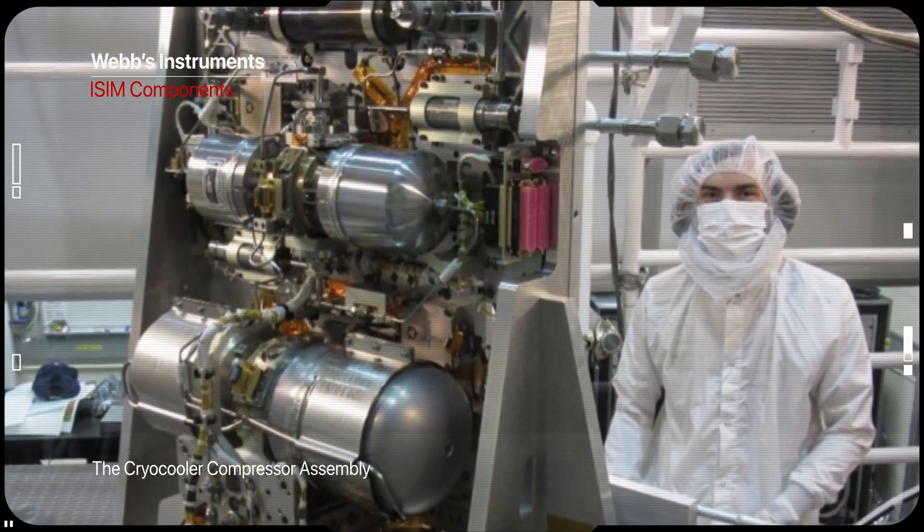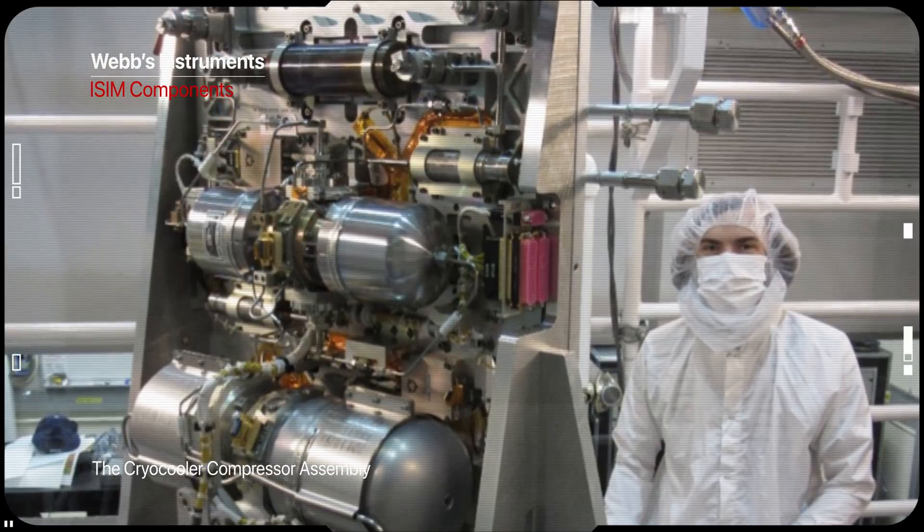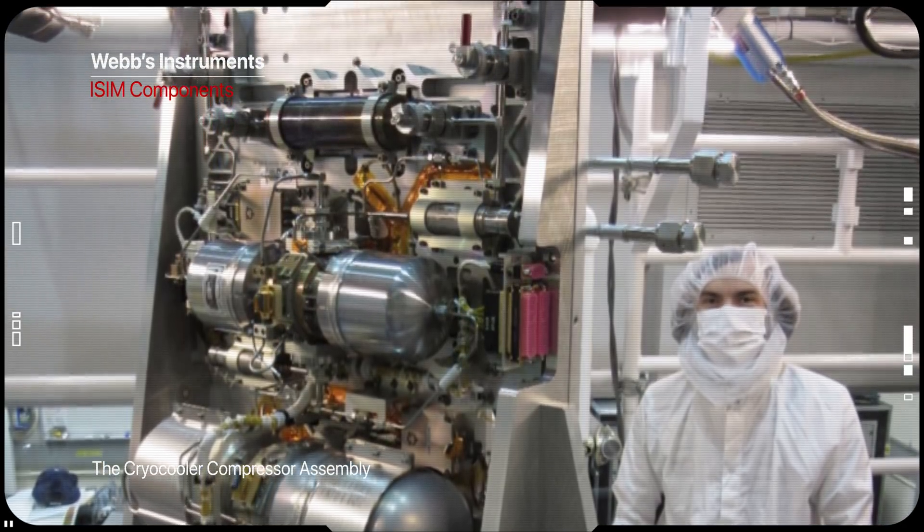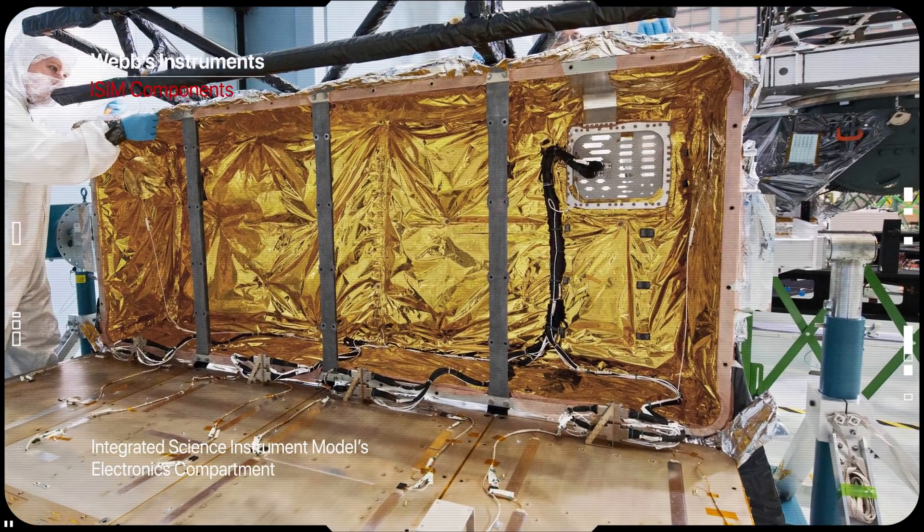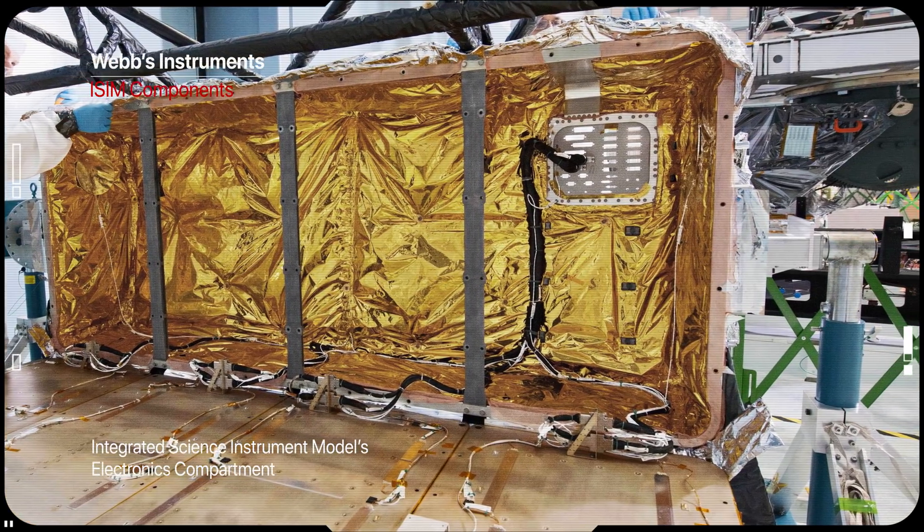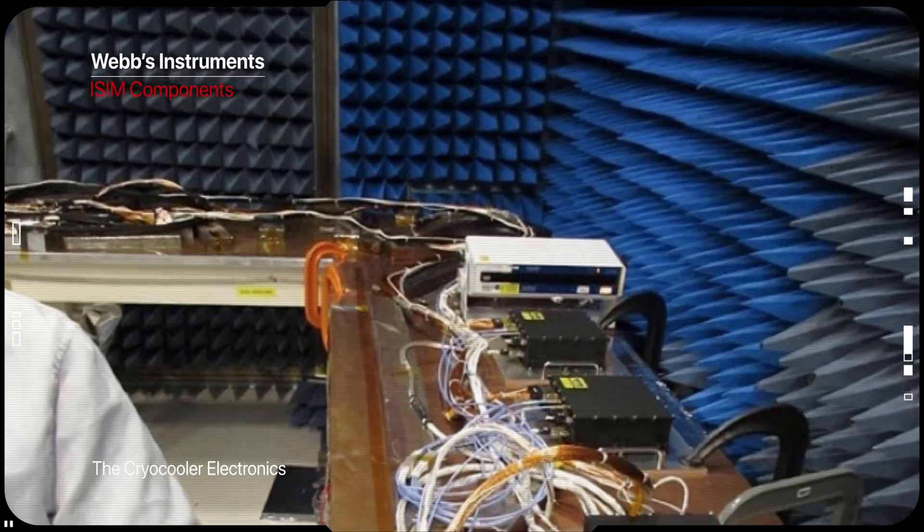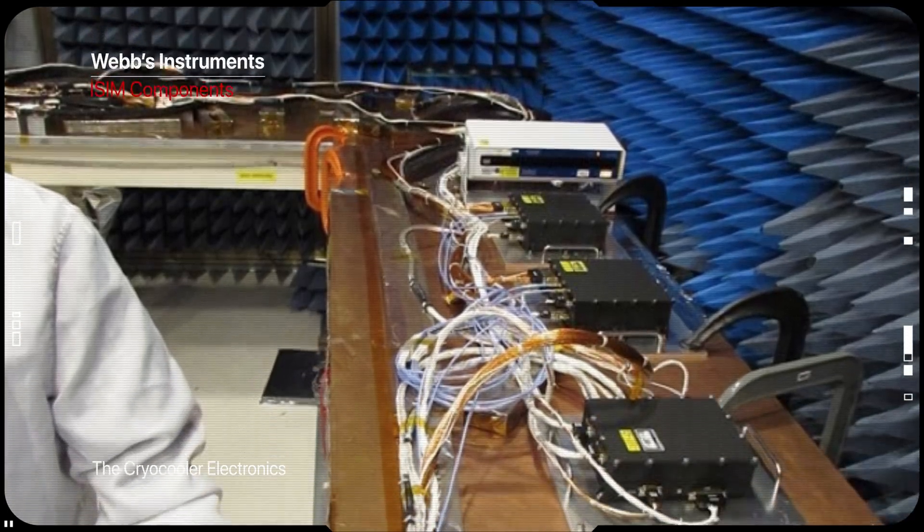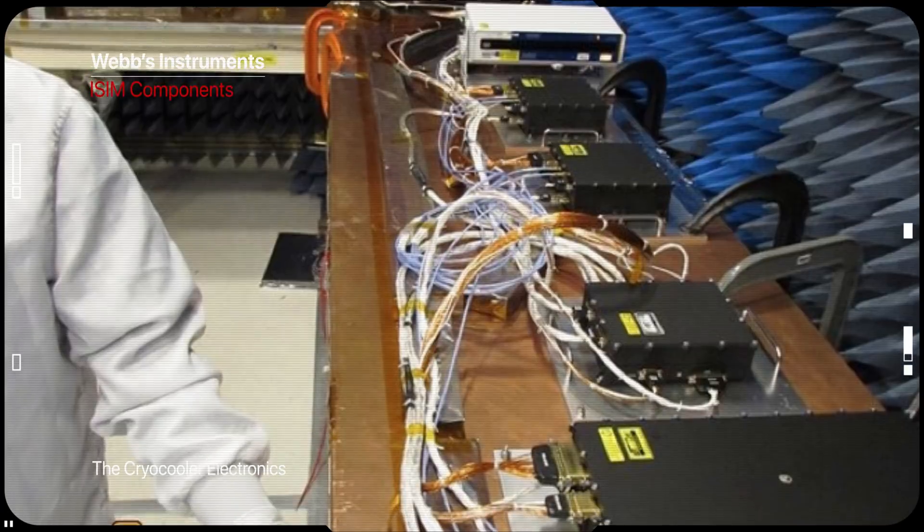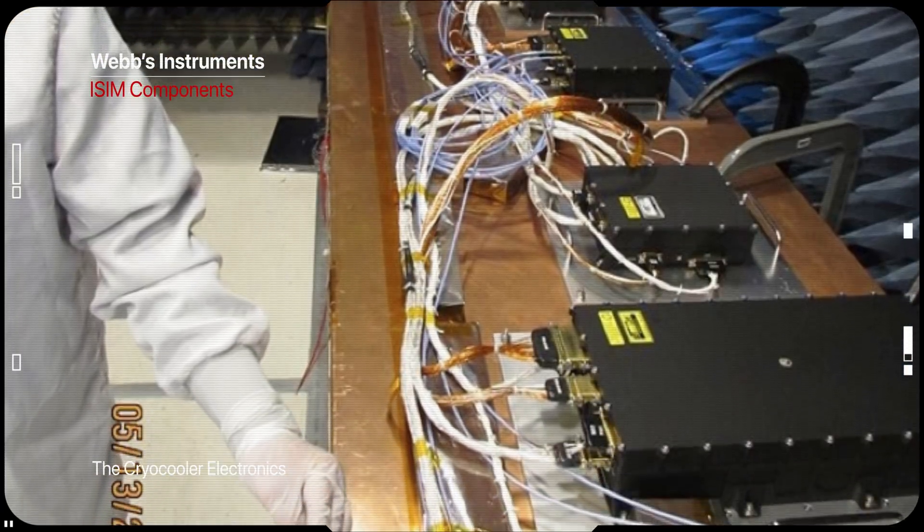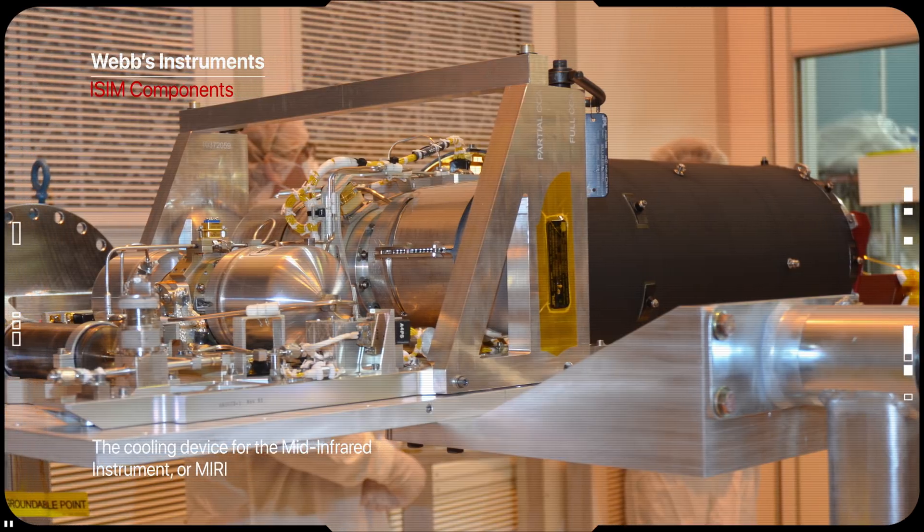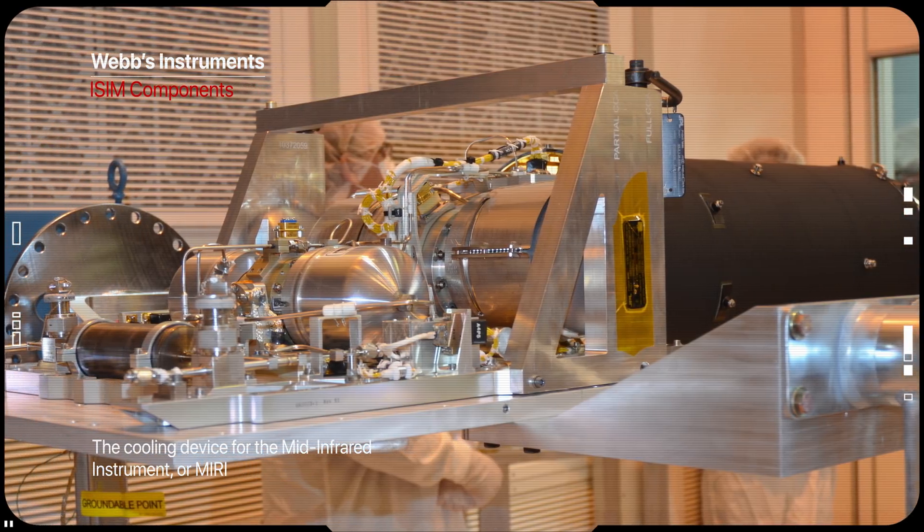The region 2 component is the ISIM electronics compartment, which provides the mounting surface and ambient thermally controlled environment for the instrument control electronics. The region 3 component, located within the spacecraft bus, is the ISIM command and data handling subsystem with integral ISIM flight software and the MIRI cryocooler compressor and control electronics.